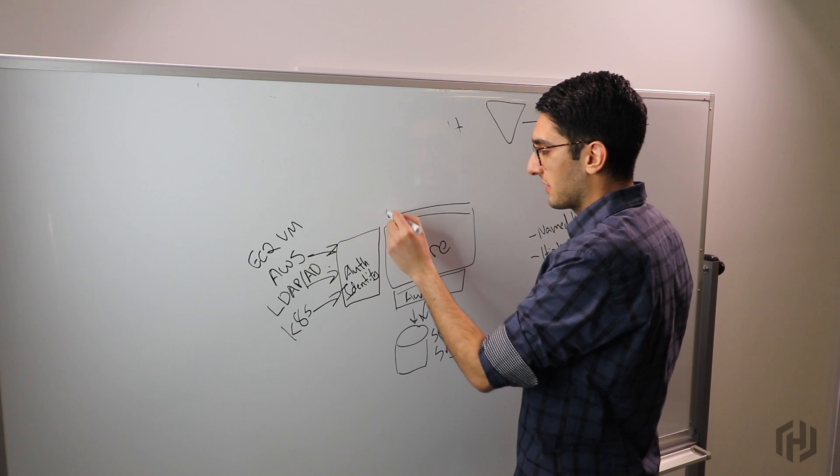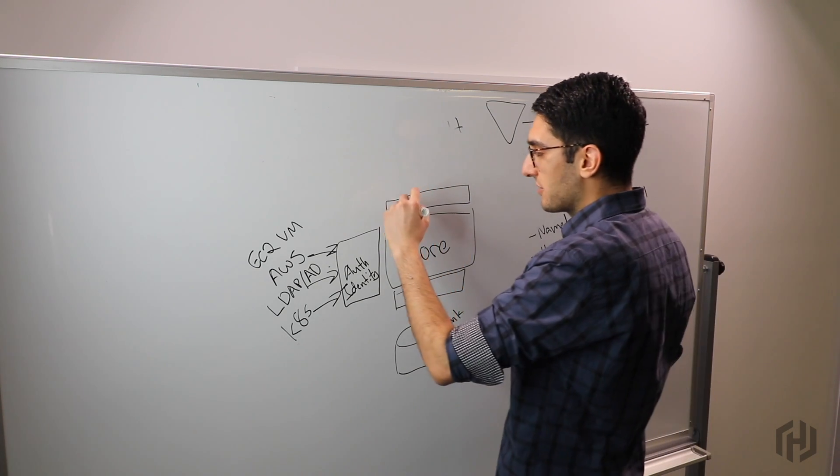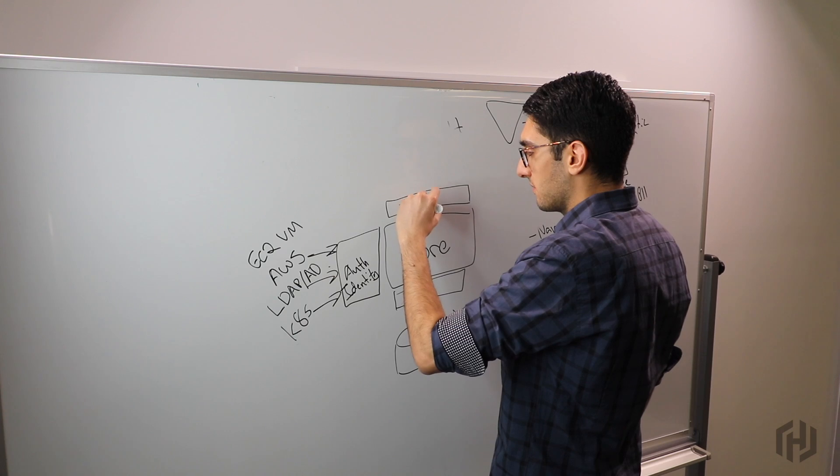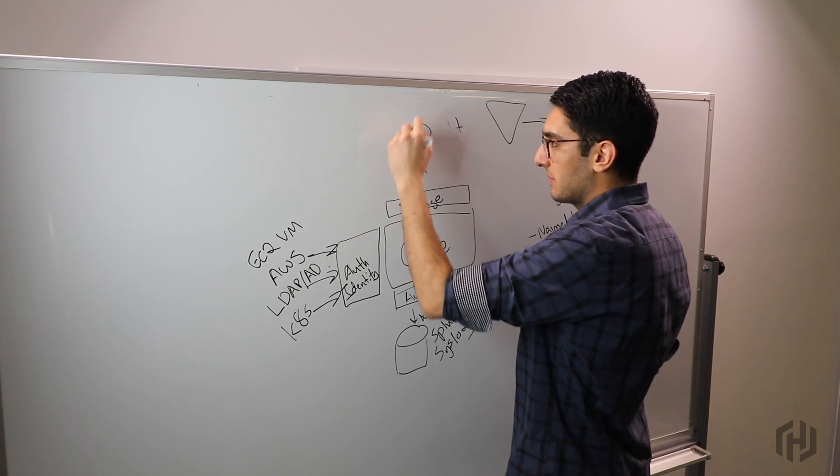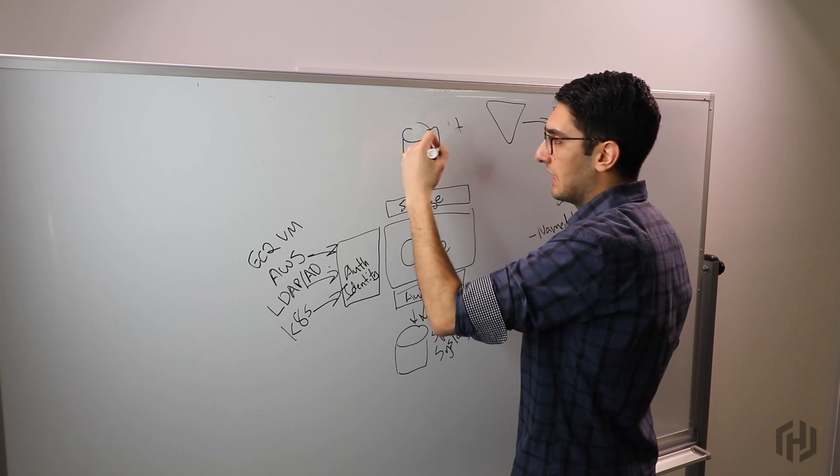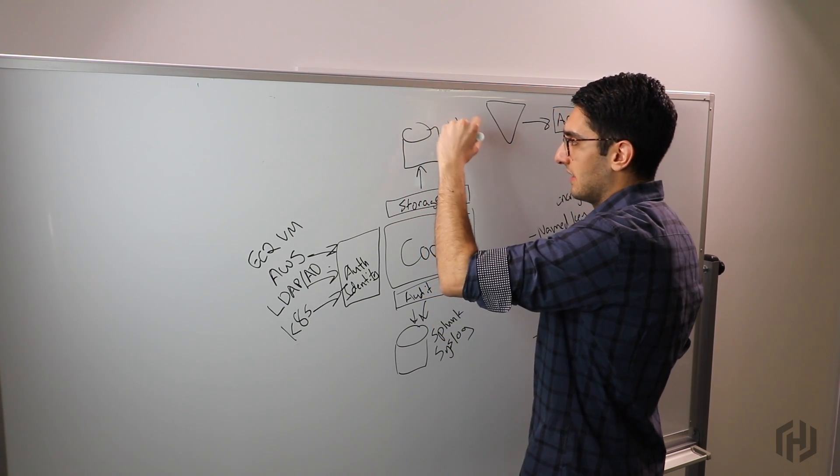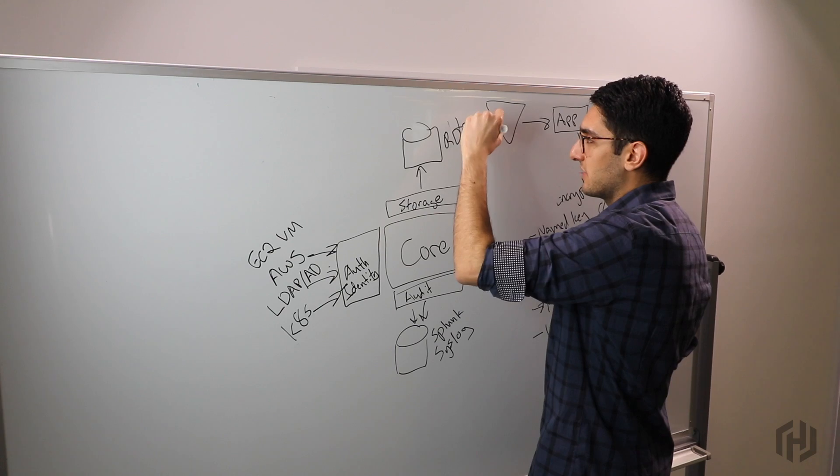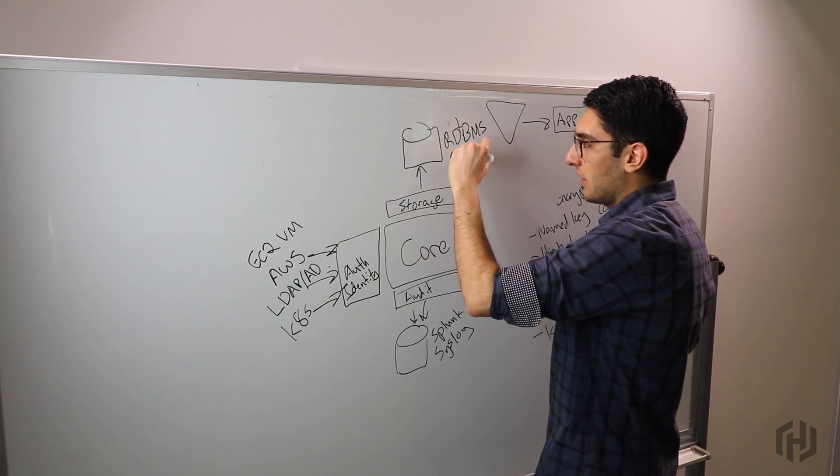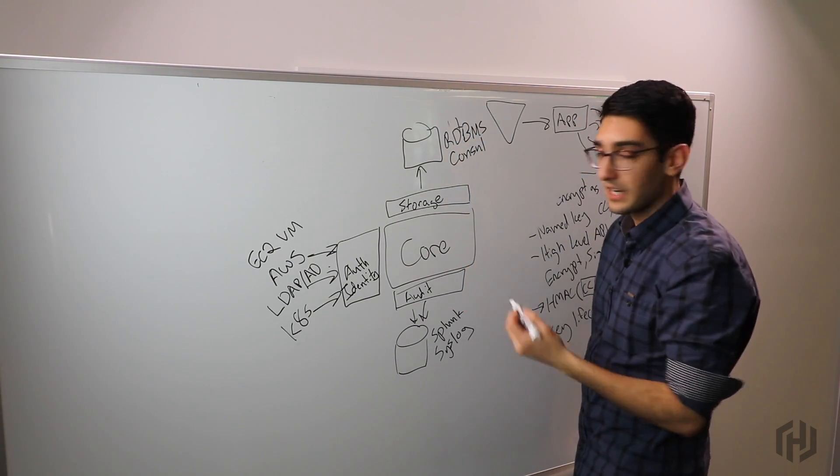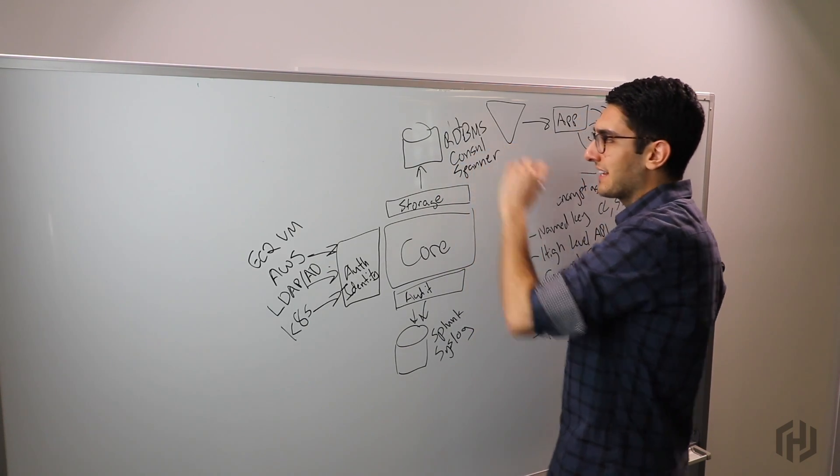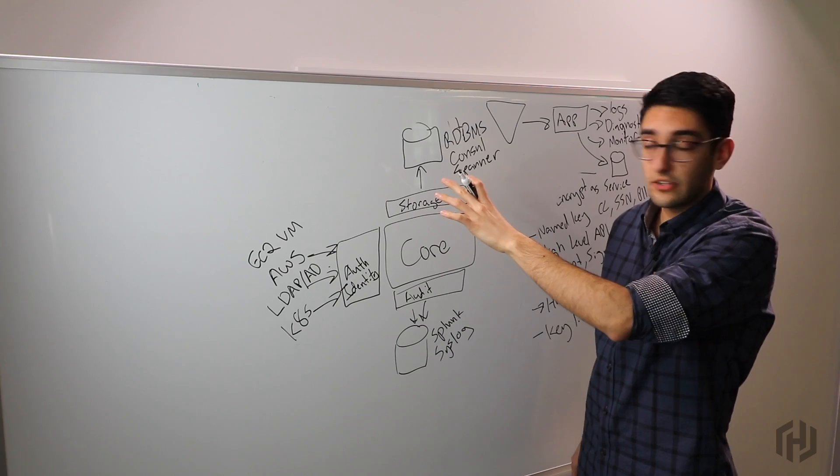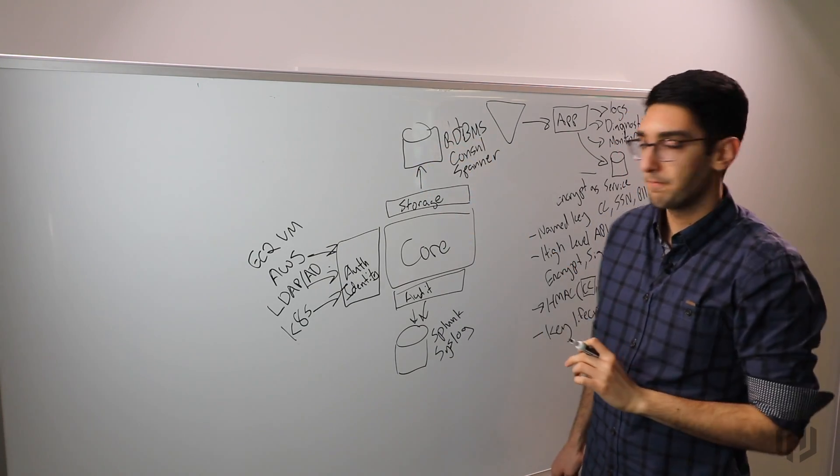The next level challenge is where does Vault actually store its own data at rest? If we're going to read and write secrets to Vault, it needs to be able to store these things somewhere. These are what we call storage backends. Storage backends are responsible for storing data at rest. This can be a standard RDBMS like MySQL or Postgres, a system like Consul, or a cloud managed database like Google Spanner.